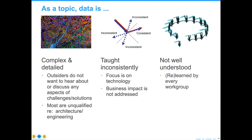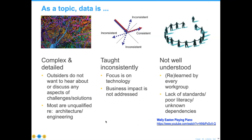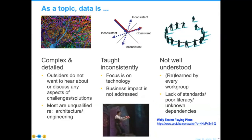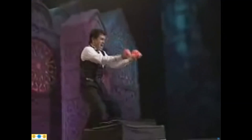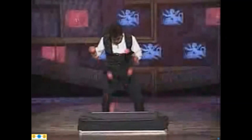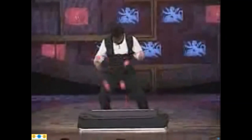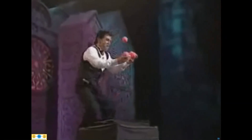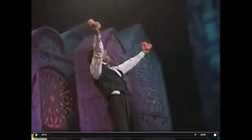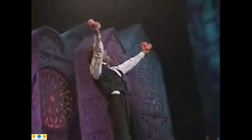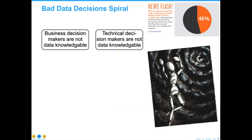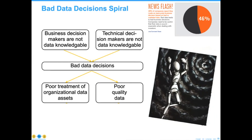The most important thing to think about is that in your group, almost everybody had to learn data in their own way. This is a guy named Wally Easton who learned how to play the piano by throwing pink balls at a nice little piece — no problem, great stuff, but if he was really learning to be a concert pianist, he probably learned incorrectly. What we're going to talk about now is how to get out of what I call a bad data decision spiral, because most business makers and technology decision makers are not data knowledgeable.